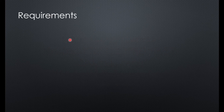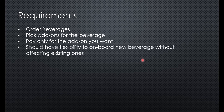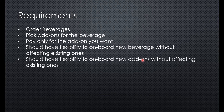Let's jump into the requirements. The first requirement is that we should be able to order some beverages and pick add-ons for our beverage, paying only for the add-ons we've asked for. We should also have the flexibility to onboard any new beverage — say americano — without affecting the existing ones like espresso or cappuccino, both code-wise and drink-wise.